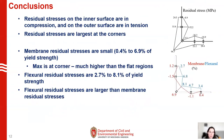Some conclusions: The residual stresses on the inner surface are in compression and on the outer surface in tension, and this agrees with previous studies. Membrane residual stresses are small — 0.4 to 6.9 percent of yield strength — and the maximum is at the corner, which is much higher than the flat regions. The flexural residual stresses are 2.7 to 8.1 percent of yield strength. Flexural residual stresses are larger than the membrane residual stresses. Overall, this is in agreement with previous studies, but at a smaller percent relative to the yield strength.